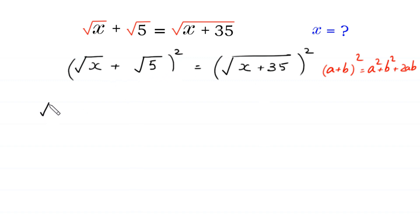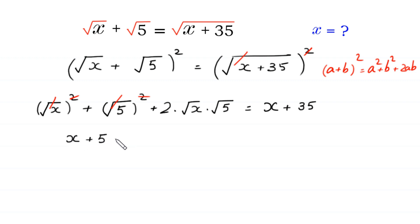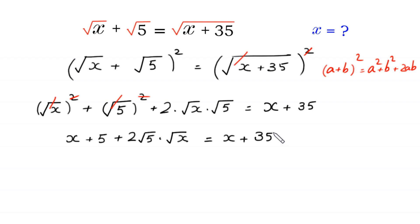Expanding: (√x)² + (√5)² + 2·√x·√5 equals (√(x+35))². The squares cancel with the square roots, leaving x + 5 + 2√5·√x on the left side equal to x + 35 on the right side.